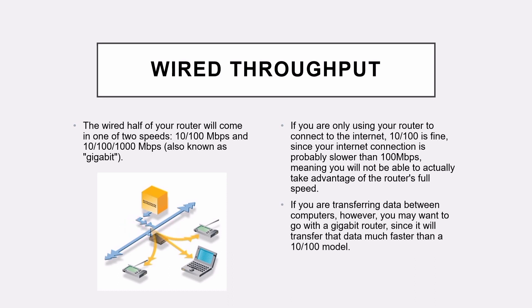Wired Throughput: the wired half of your router will come in one of two speeds — 10/100 Mbps, and 10/100/1000 Mbps, also known as gigabit. If you are only using your router to connect to the internet, 10/100 Mbps is fine, since your internet connection is probably slower than 100 Mbps. But if you are transferring data between computers, you may want to go with a gigabit router since it will transfer data much faster than a 10/100 model.